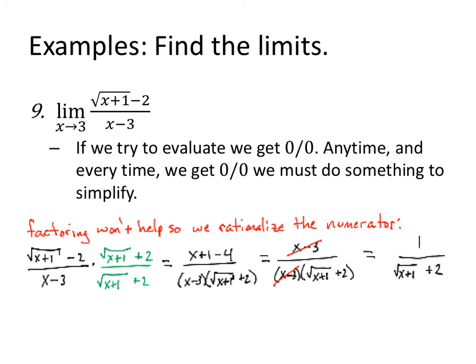In example 9, if I try to evaluate, if X approaches 3, I'll get a 3 in the denominator, excuse me, a zero in the denominator. But if I put a 3 in the numerator, 3 plus 1 is 4. The square root of 4 is 2. 2 minus 2 is 0. So this actually looks like 0 over 0. Any time we get 0 over 0 as a result of evaluating a limit, it tells us we have to do something. It tells us in fact that something can be done. I have no idea how to factor this, so let's do the opposite. Let's rationalize the numerator. Weird process, but it turns out that it works out really well in this case. To rationalize the numerator, we're going to multiply both numerator and denominator by the conjugate. The conjugate changes the sign in the middle of a binomial.